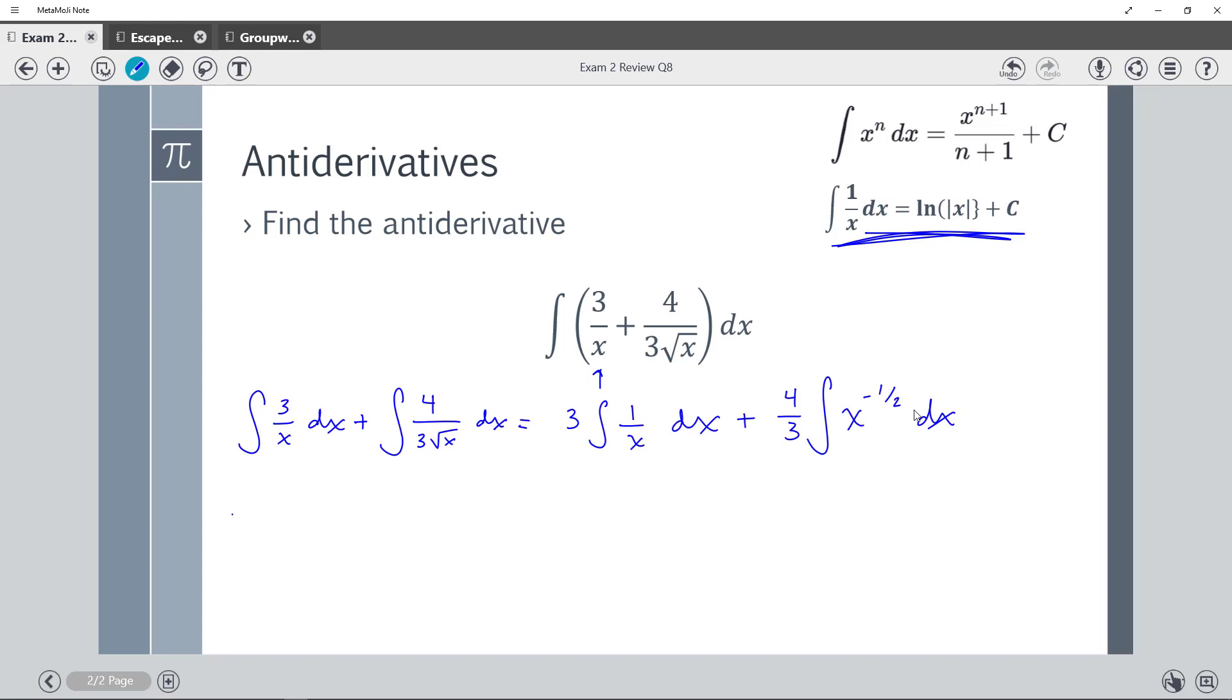All right, now here we go. So 3, this piece right here, looks like that. So I believe it will be ln of absolute value of x. This piece, the 4 thirds, this looks like a power rule.